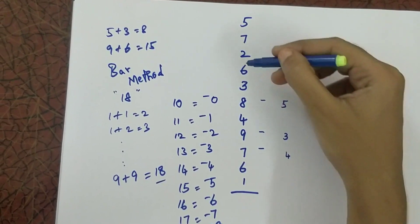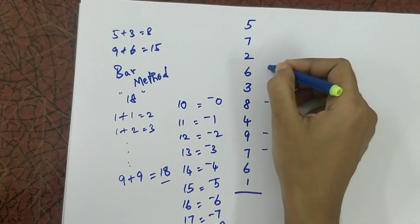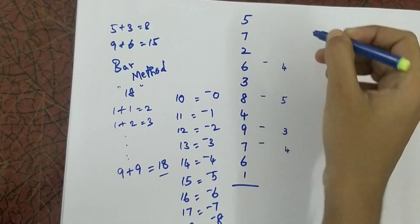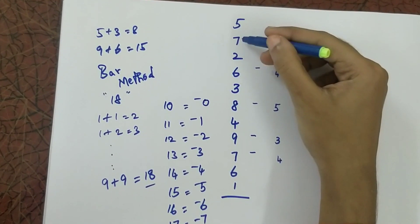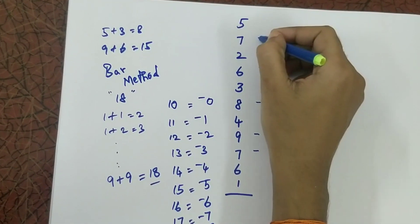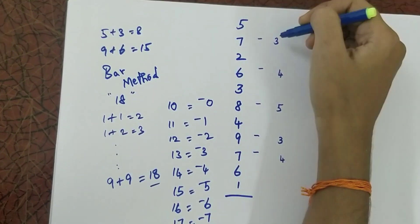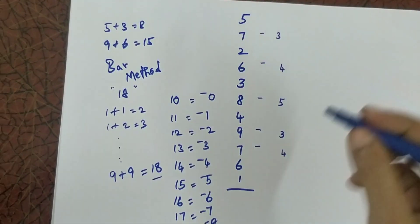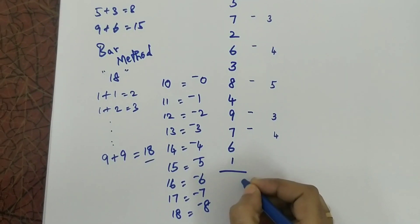5 plus 3 is 8. 8 plus 6 is 14. So I am writing 8 here.